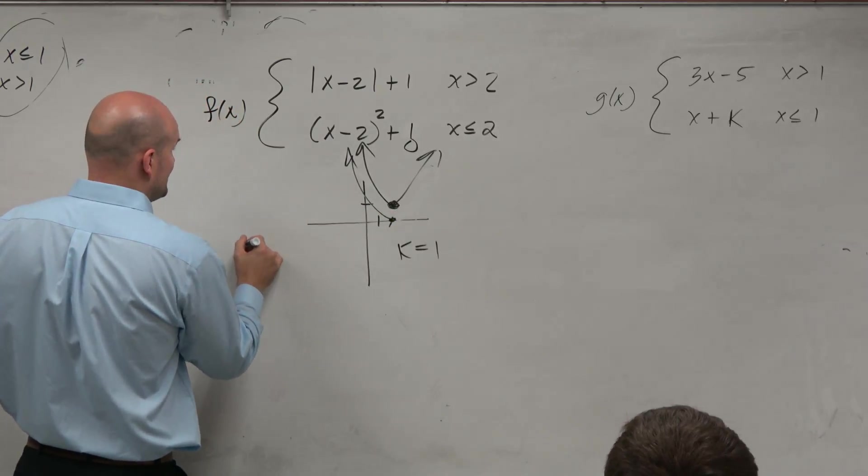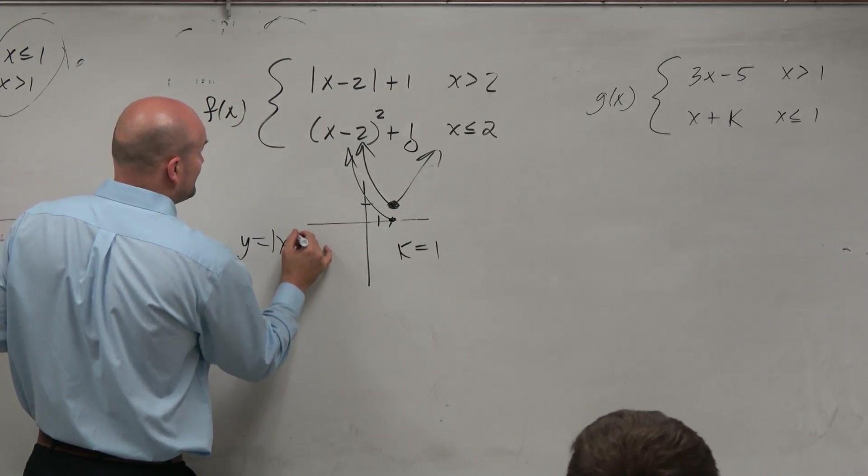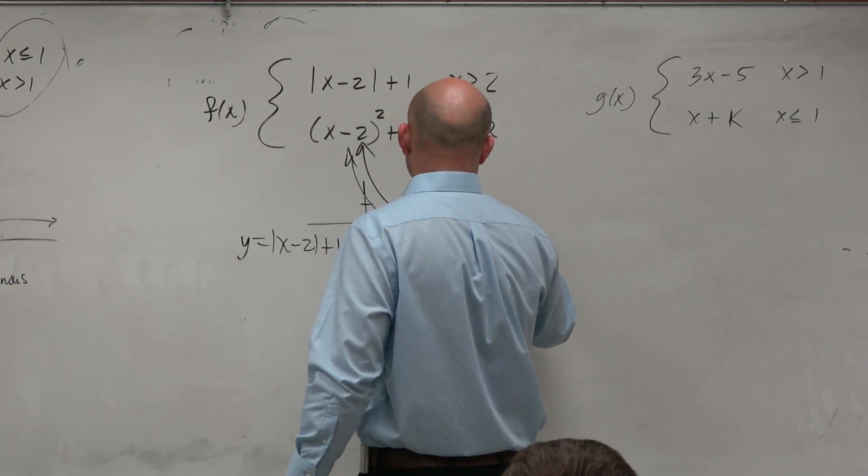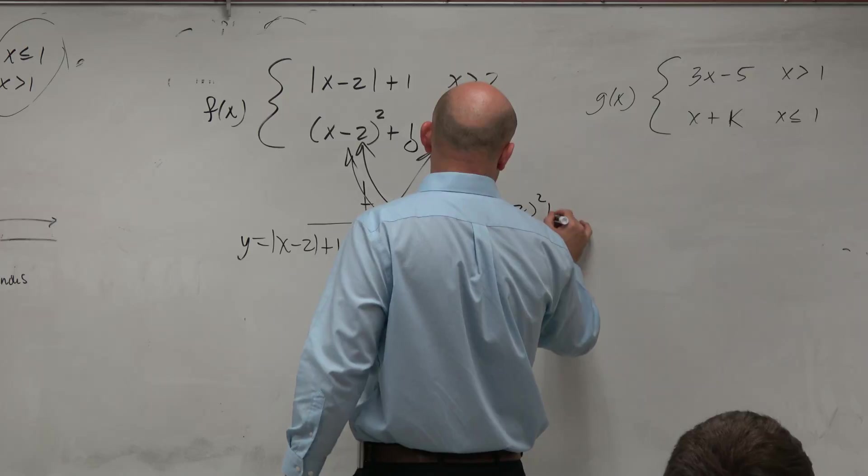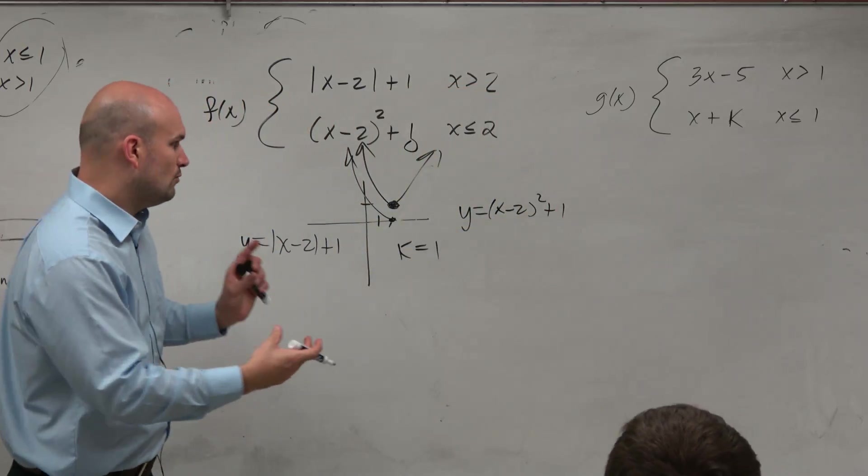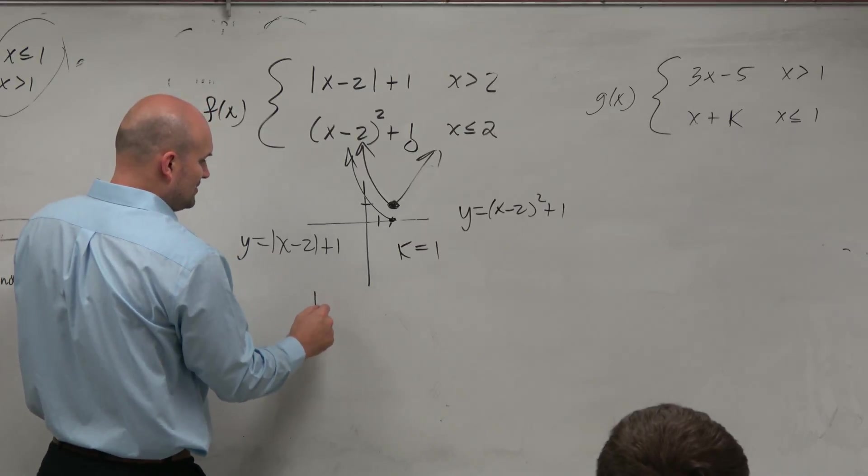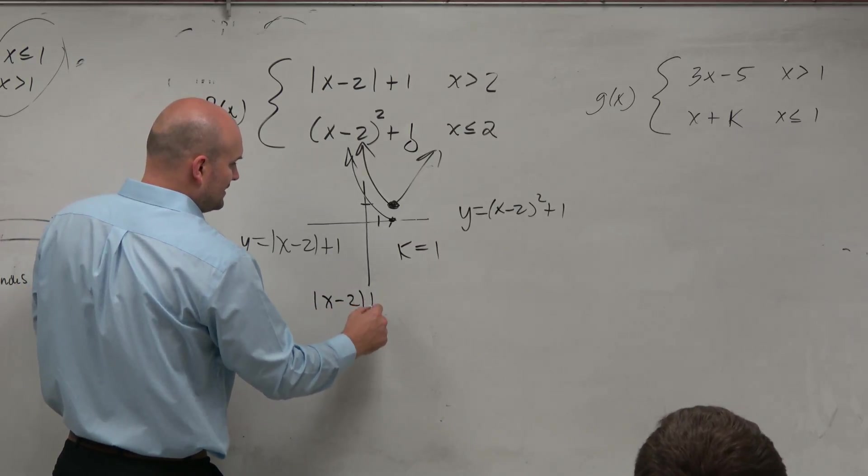So again, guys, you can write this as y equals absolute value of x minus 2 plus 1. And this one as y equals x minus 2 squared plus k. So if you want the y values to be equal, well, y equals this and y equals that. So guess what? Set them equal to each other.